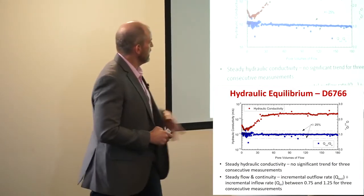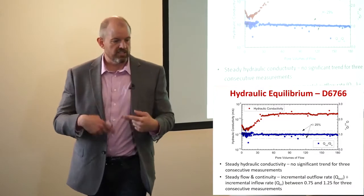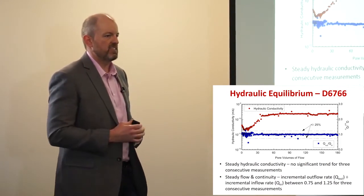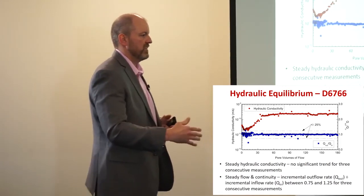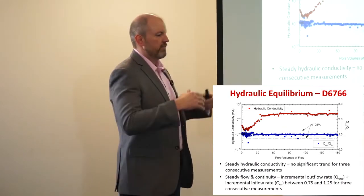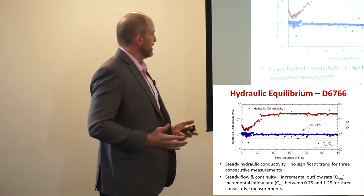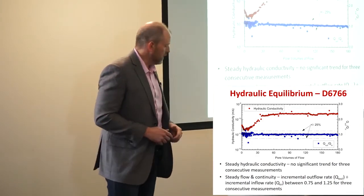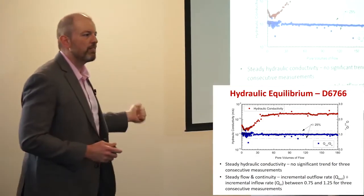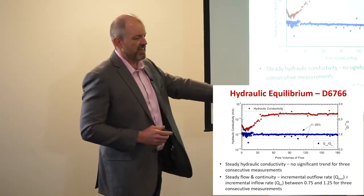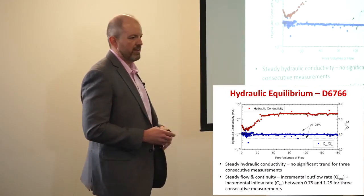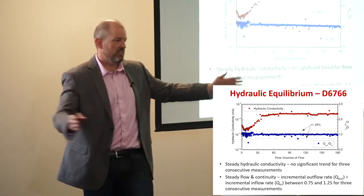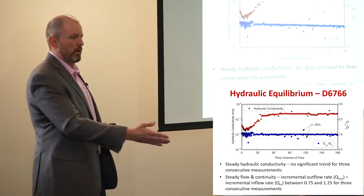Right at this point in the valley, at five pore volumes, we encounter something which would allow a test to be terminated by the standard — and something we're working really hard to correct within ASTM, as we're collectively as an academic community moving the industry forward. These bottom three readings right here meet the first termination criteria in the standard. If you can get three readings in a row with steady state conditions, no significant upward or downward trend, and inflow-outflow ratios within the acceptable range, you can pull the plug on that test and call that product good.